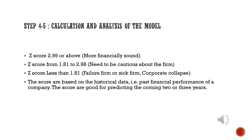After putting all 5 ratios of a particular company into this linear function, a Z-Score is calculated. We then compare the Z-Score with set standards. If the calculated Z-Score is 2.99 or above, the company is considered more financially sound. If the Z-Score is between 1.81 and 2.98, one needs to be cautious about the firm. If the Z-Score is less than 1.81, the company is considered a sick or failing firm and the corporate might collapse. The scores are based on historical data — the past financial performance of a company — and are good for predicting the coming two or three years.